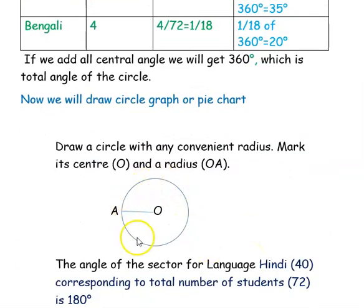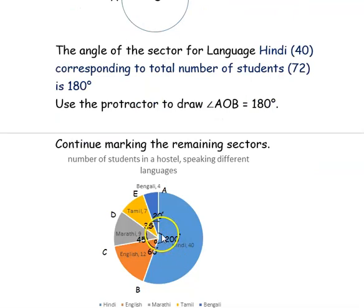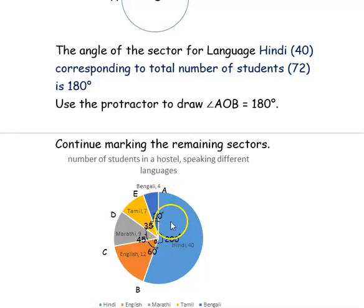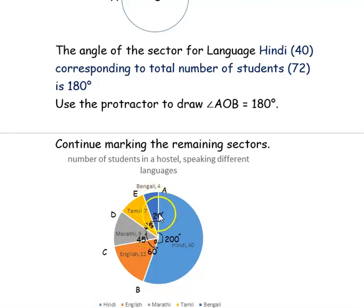First step, we draw a circle of radius OA with O as the center. Next, we mark each language based on the central angle found. For Hindi, we have 200 degrees — using the protractor, I have marked point B. Then I marked point COB for English, that is 60 degrees. For Marathi, it is 45 degrees. For Tamil, it is 35 degrees. The remaining angle should be 20 degrees, that is for Bengali language.